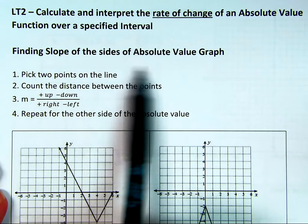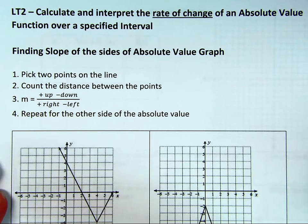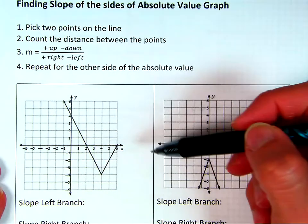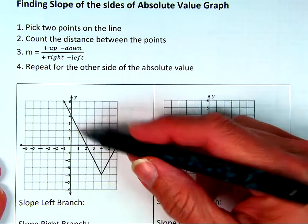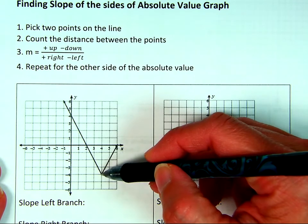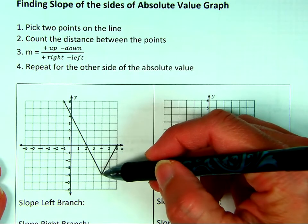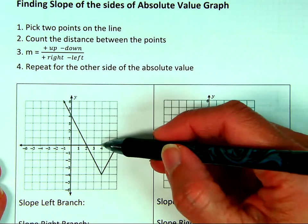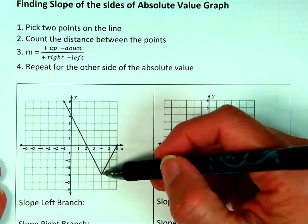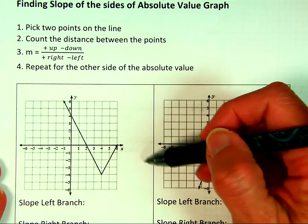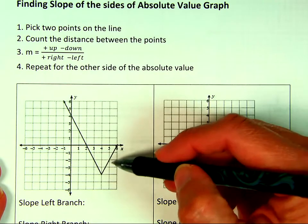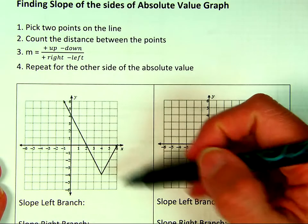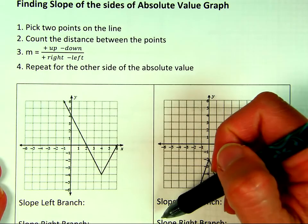We're going to find the slope of the different sides. As you remember from class, an absolute value function is a piecewise function — it's kind of like two lines. This line is graphed from these x values where x is less than 4, and then this line is graphed where x is greater than 4. It makes a V because it's two parts of a line.